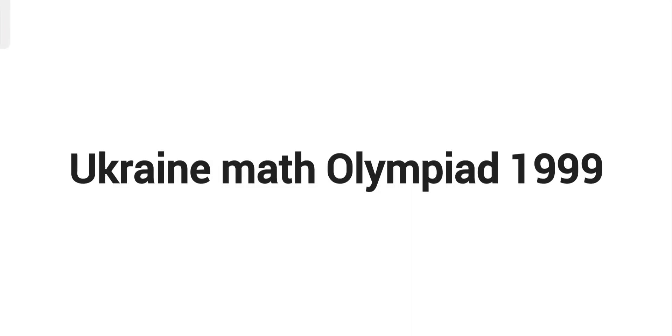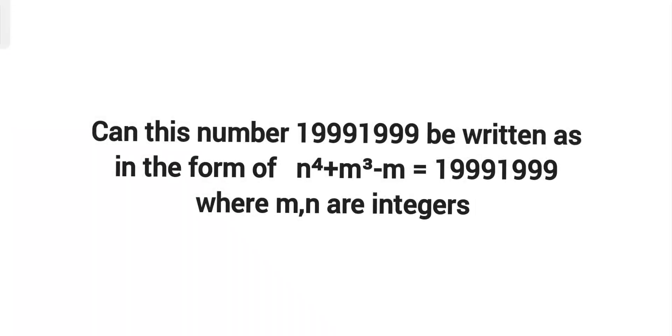Hope you can solve this one. If you would like to try this problem, give it a try, otherwise keep watching how to solve this question. The question is: can this number 19991999 be written in the form of n^4 + m^3 - m = 19991999, where n and m are integers?